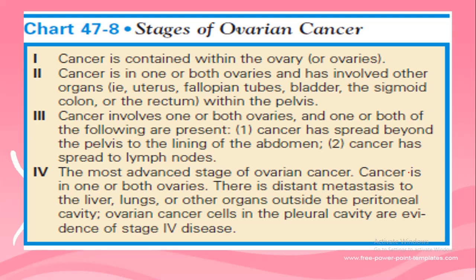Stage 4 is the most advanced stage of ovarian cancer. The cancer is in one or both ovaries with distant metastasis to the liver, lungs, or other organs outside the peritoneal cavity. Ovarian cancer in the pleural cavity is also evidence of Stage 4 disease.